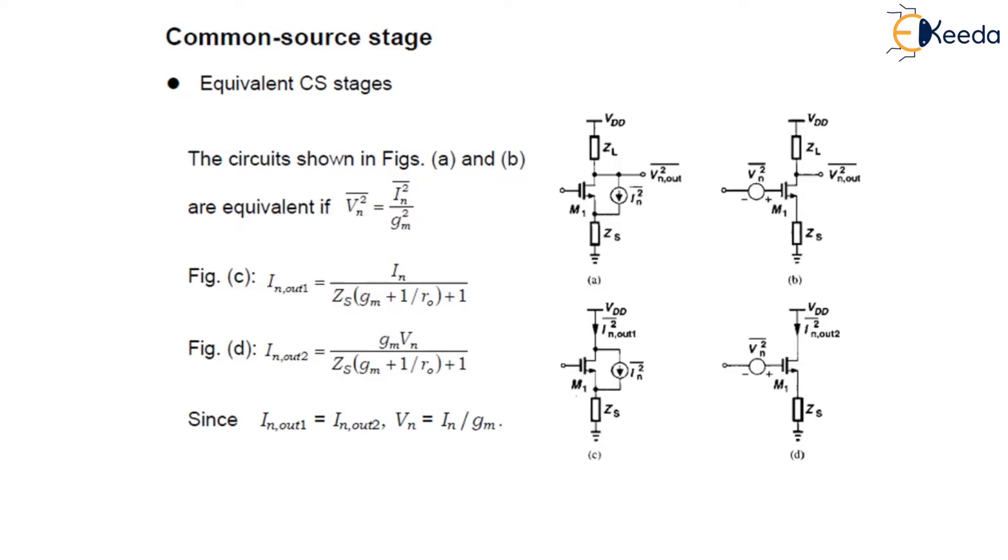The noise source can be transformed from a drain source current to a gate series voltage for arbitrary Zs, that is arbitrary output impedance. We can simply convert the drain source current into a noise gate series voltage.